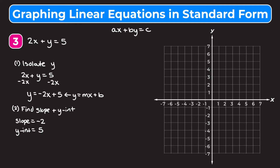We plot the y intercept of positive 5 on the graph. Then we use the slope to find more points. Our slope is negative 2, which is the same as negative 2 over 1, and remember slope is rise over run. So we can go up 2 and to the left one, or down 2 and to the right one to get another point. With three points we draw a straight line through them. This method is a bit slower, but if you prefer converting to y equals mx plus b form first, you can definitely do that.